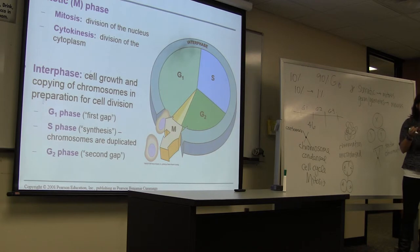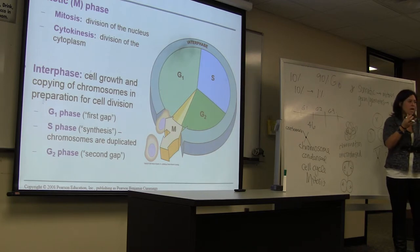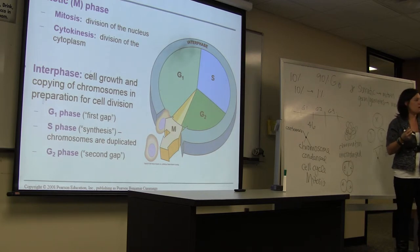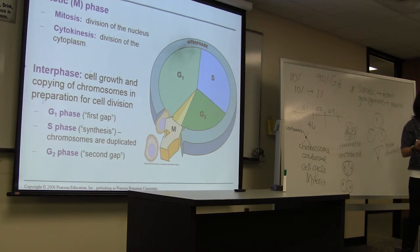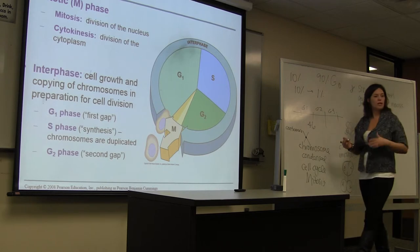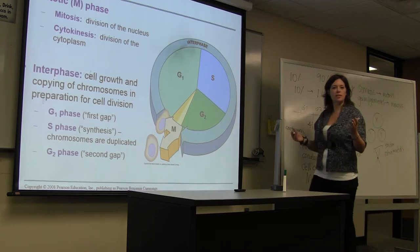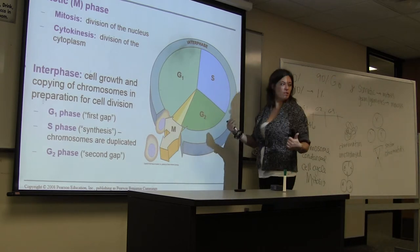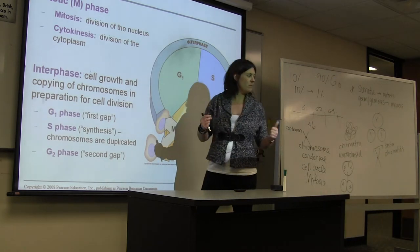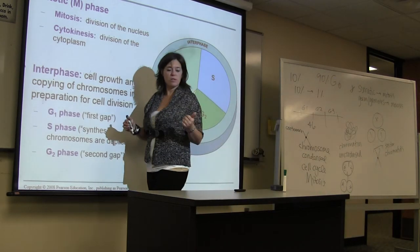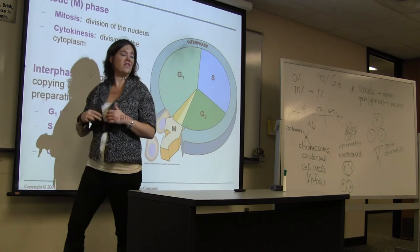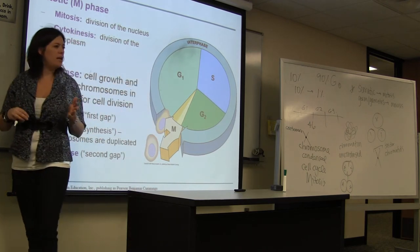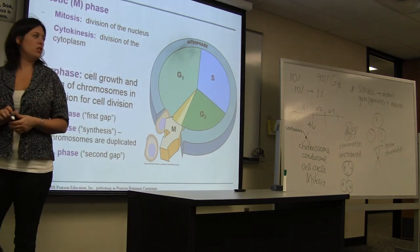They're really closely related — almost happening simultaneously — but we give them two different names. Cytokinesis means division of the cytoplasm, and mitosis means division of the DNA, or division of the nucleus.